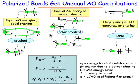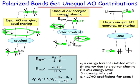In the second case, we have a carbon atom that brings a high-energy atomic orbital, and it combines with a fluorine that has a low-energy atomic orbital. These unequal energies result in unequal atomic orbital sharing, and so we have a polar covalent bond.